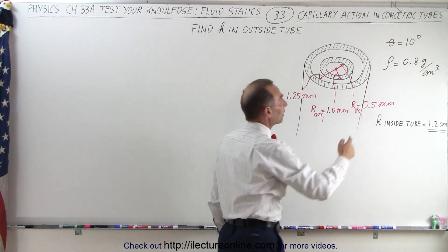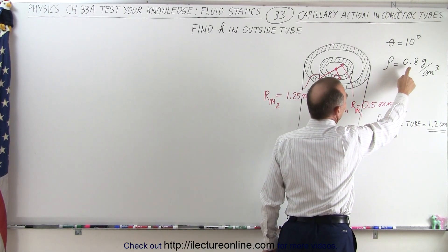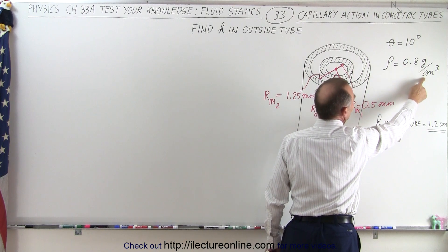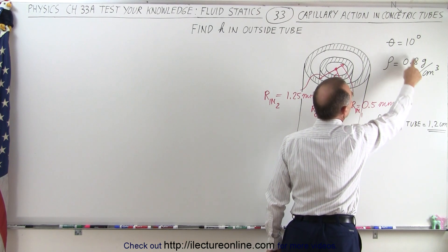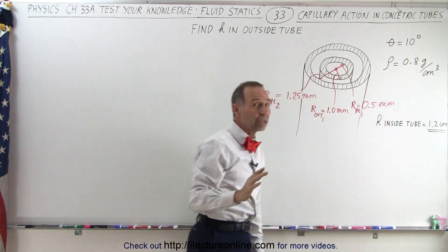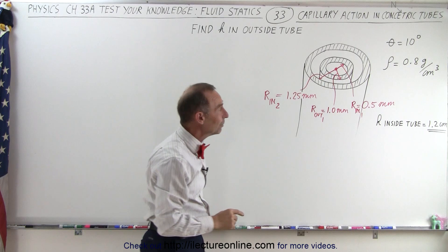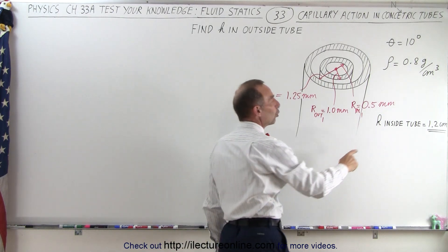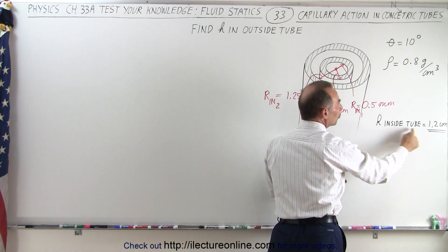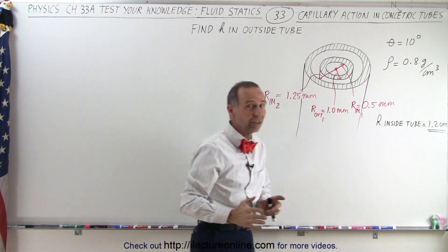We are told that the liquid has a specific gravity or density of 0.8 grams per cubic centimeter, a contact angle of 10 degrees, and the height of the capillary action on the inside tube is equal to 1.2 centimeters.